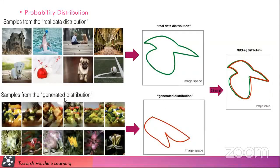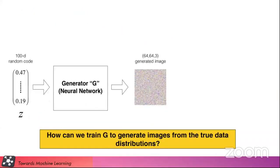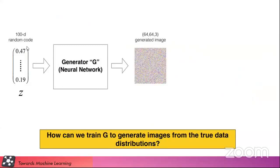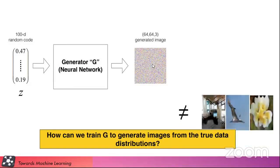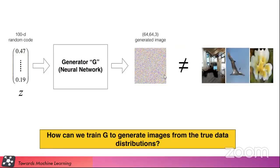If we can get the generator's distribution to match the real world distribution, then we can say the generator has a good ability to generate new images. This is the generator network — you give a noise input to the generator and initially it produces random noise, because it is not trained yet. We want some real images, but we get random noise because it is not trained. So we need to train it from the true data distribution. Now we are moving forward to the training process of GANs.